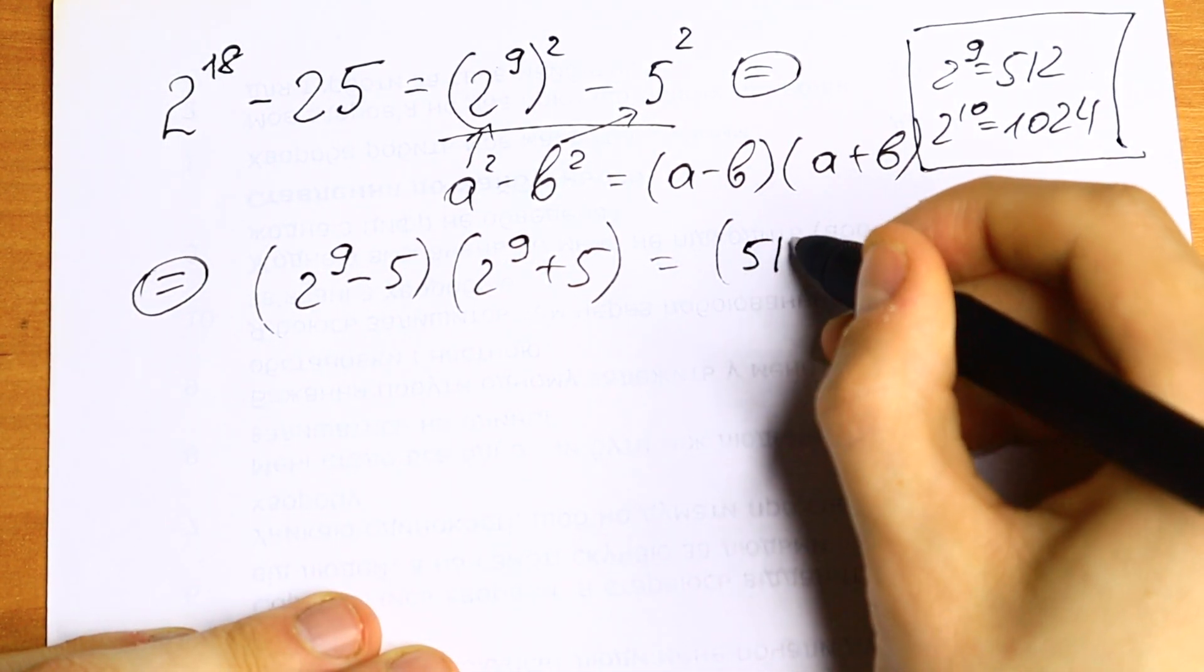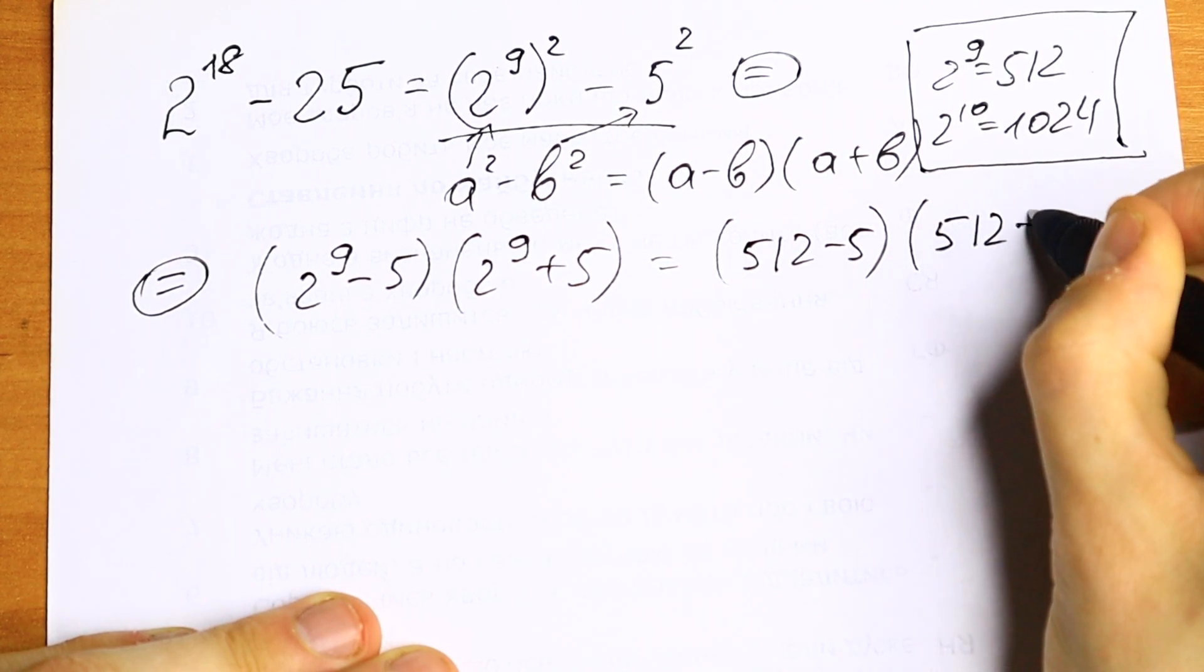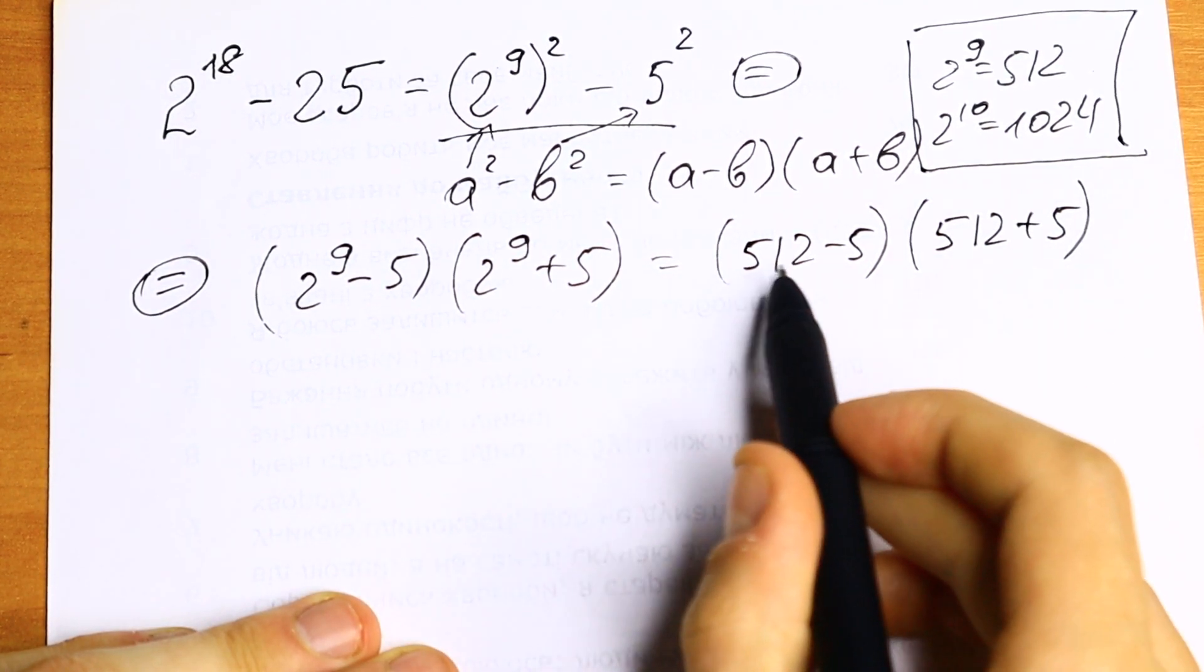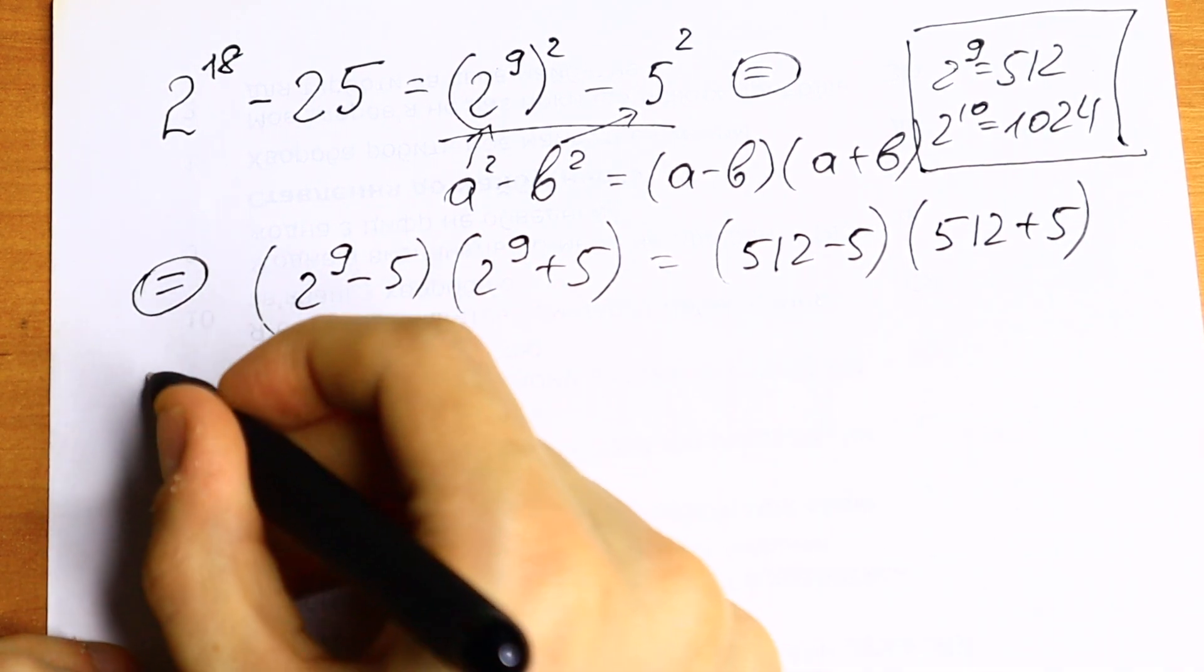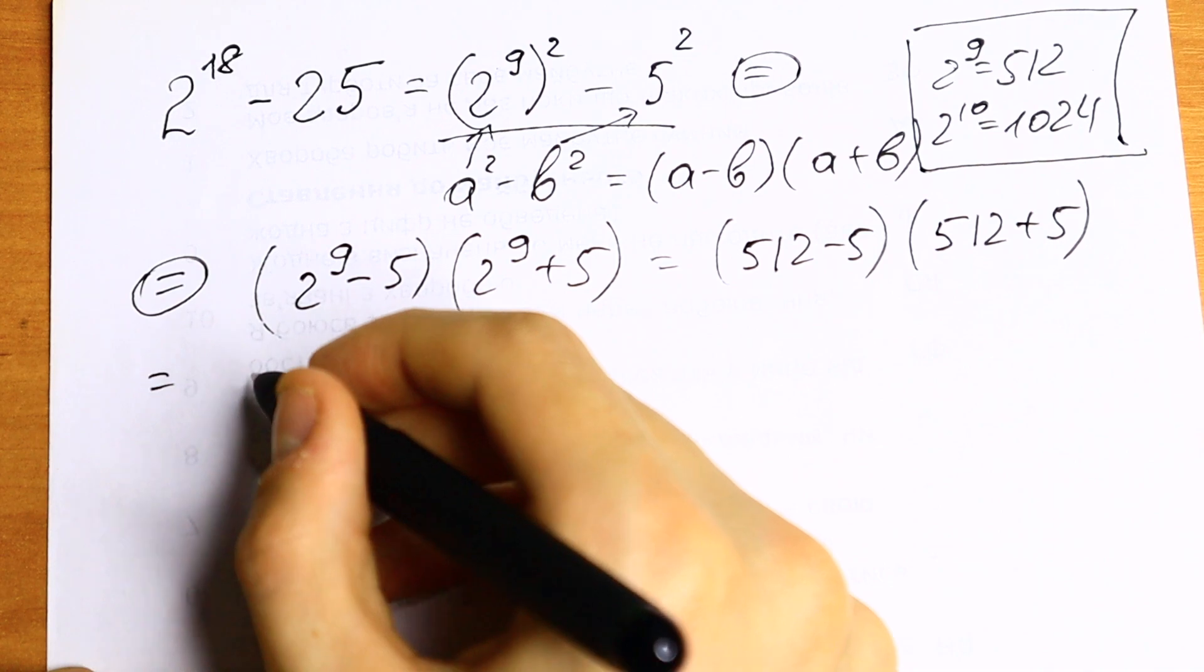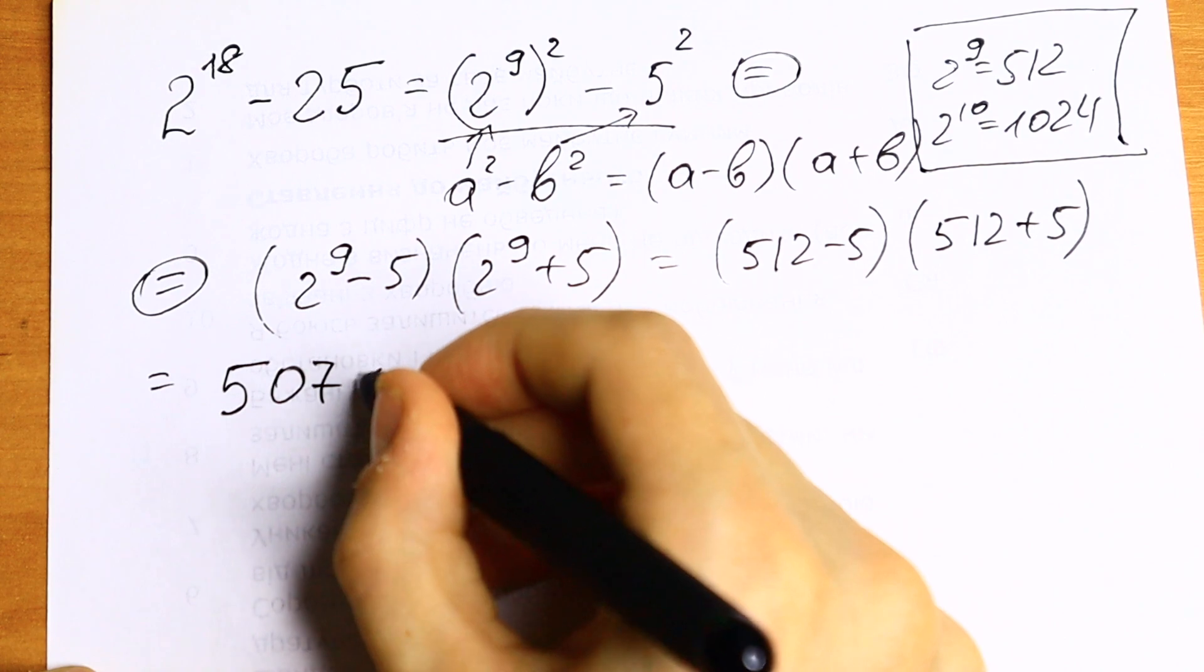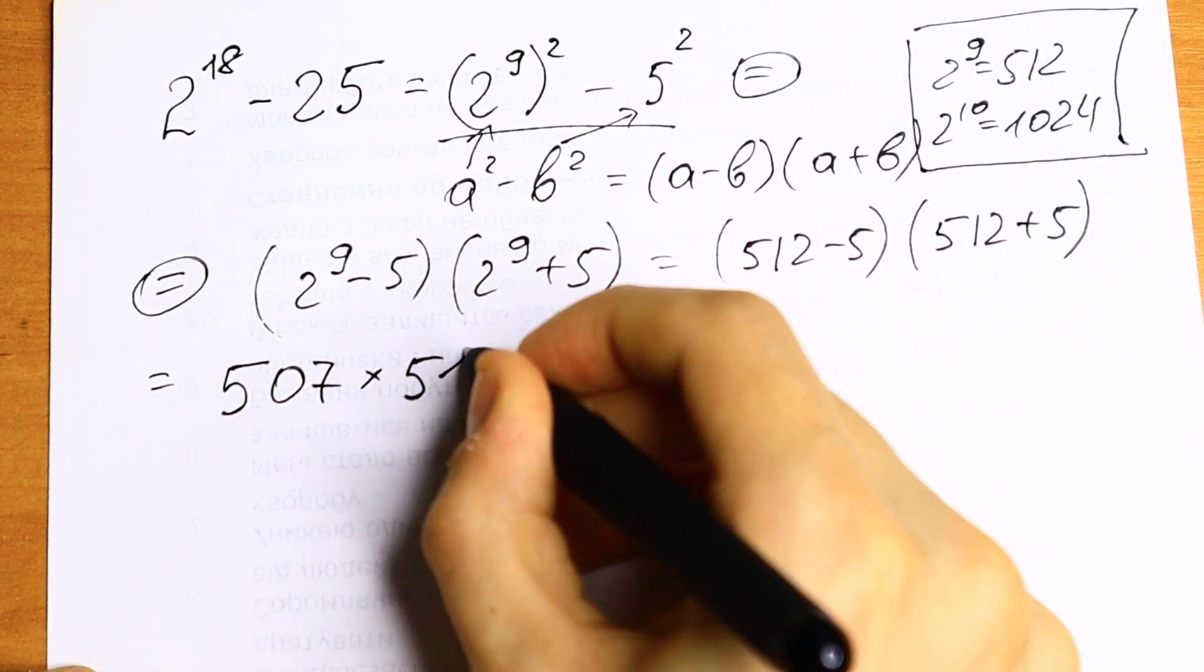We'll have 512 minus 5 and 512 plus 5. So we can easily find these 2 numbers. What we'll have as a result? We'll have 507 times 517.